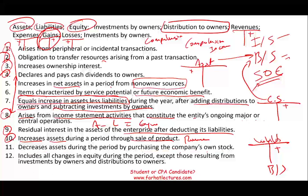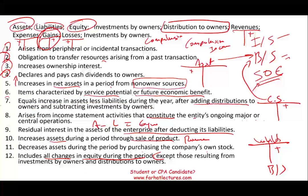Number twelve: includes all changes in equity during the period, except those resulting from investment by owners and distribution by owners. Notice that definitions 7 and 12 are essentially the same — everything that changes equity, other than owner transactions, is called comprehensive income.